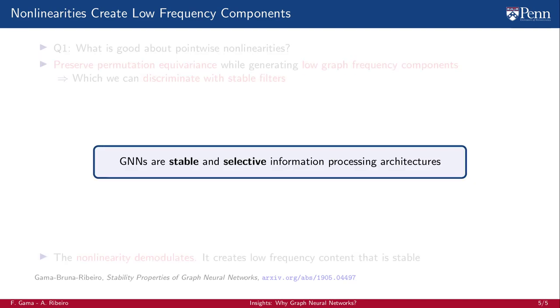In essence, GNNs are a stable and selective information processing architecture, whereas linear graph filters are not.